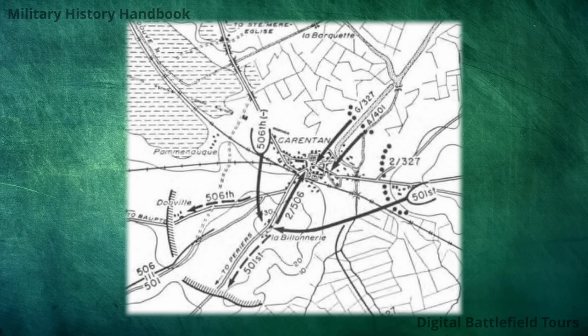The 506th Regiment, positioned at Hill 30 to the south of Carentan, would in the early hours of the 12th of June send one of its battalions into Carentan as part of the attack — a task given to the Second Battalion. The 506th Parachute Infantry Regiment consisted of three battalions: two would hold the line to the south of the town, and the Second Battalion would move north into the town itself. The Second Battalion was commanded by Lieutenant Colonel Strayer and contained three companies: Dog, Easy, and Fox companies.